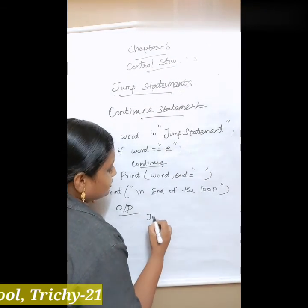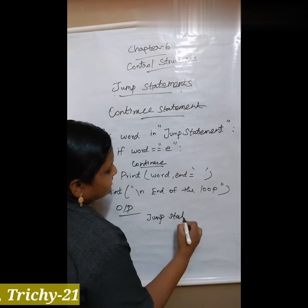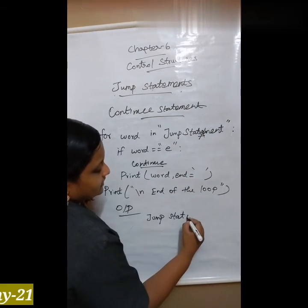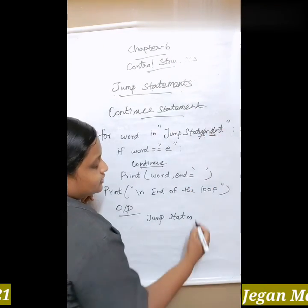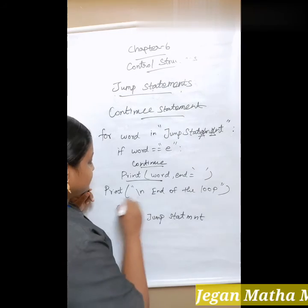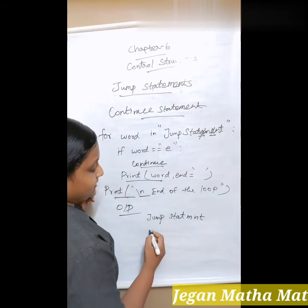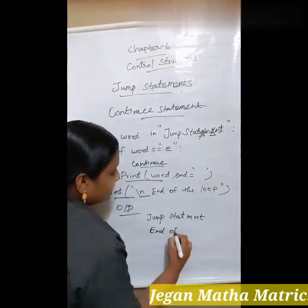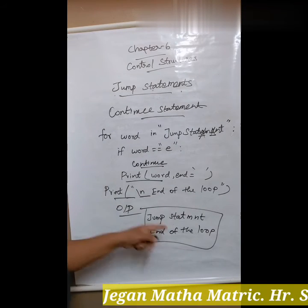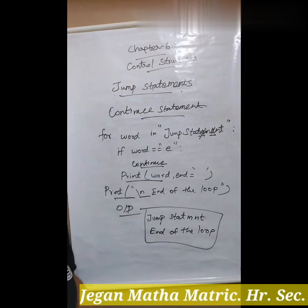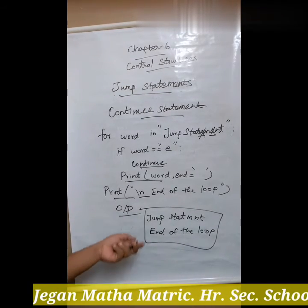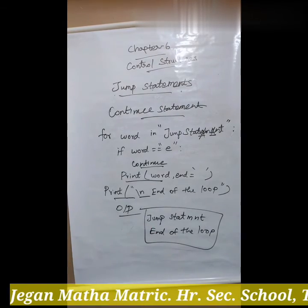Tracing the continue example: J, U, M, P, S, T, A, T — once 'e' is reached, it skips and continues with the next character. The second 'e' is also skipped. After all iterations, there is a final print statement for end of the loop. So the output of the program is 'JUMP STAT M NT' and 'end of the loop'. Except the letter 'e', all other letters get printed. This is the example for continue statement.